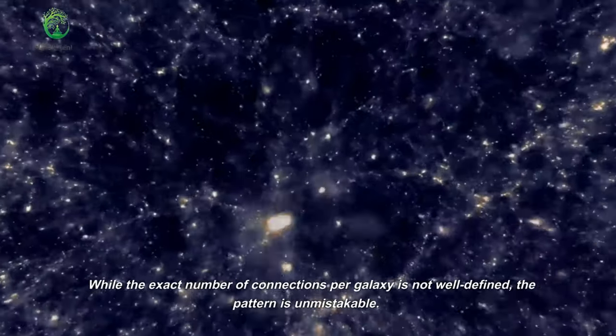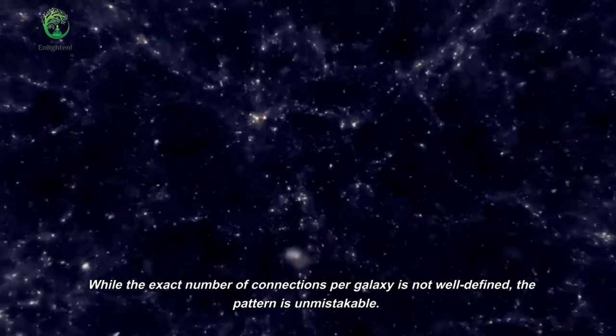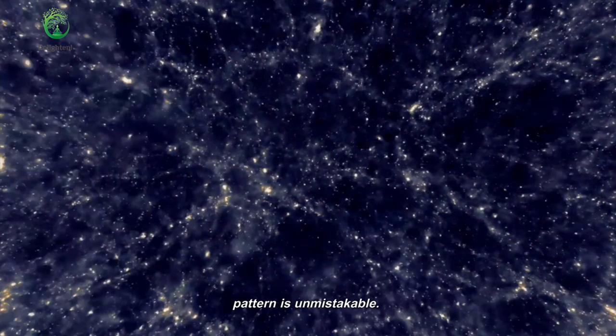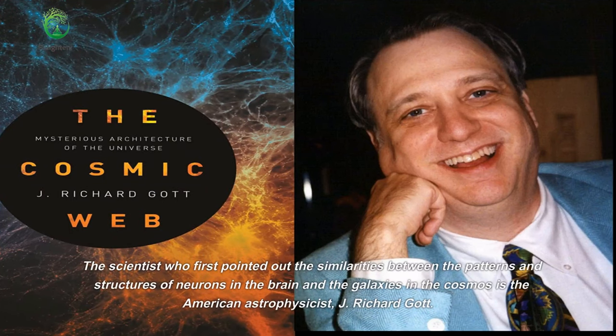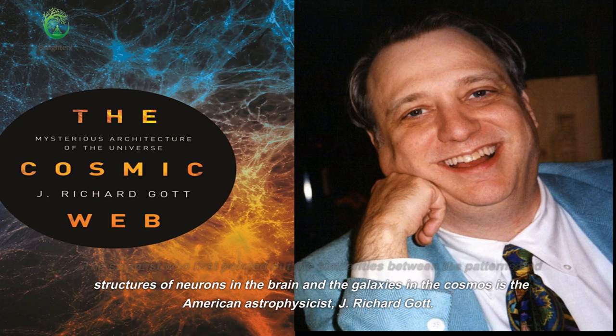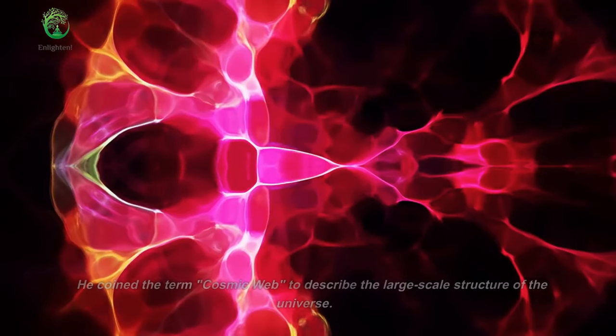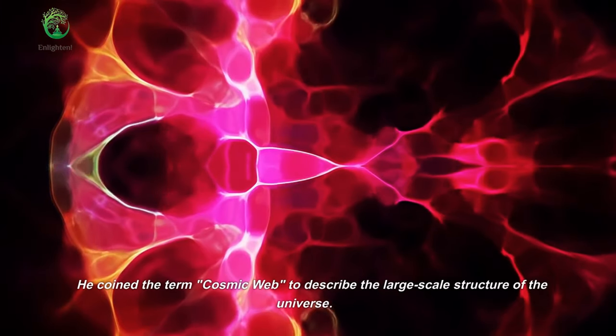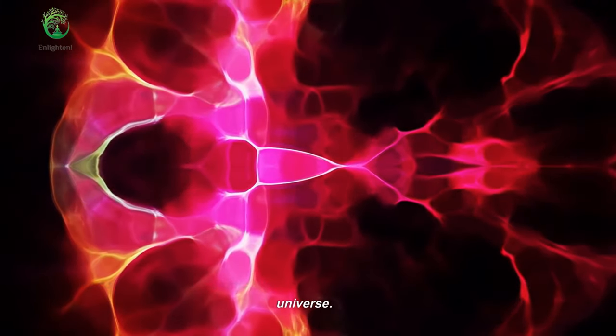While the exact number of connections per galaxy is not well defined, the pattern is unmistakable. The scientist who first pointed out the similarities between the patterns and structures of neurons in the brain and the galaxies in the cosmos is the American astrophysicist J. Richard Gott. He coined the term cosmic web to describe the large-scale structure of the universe.